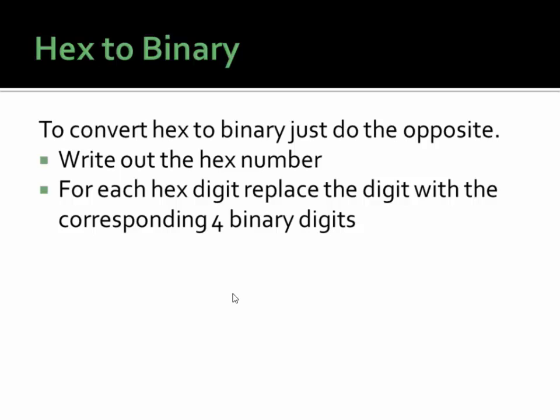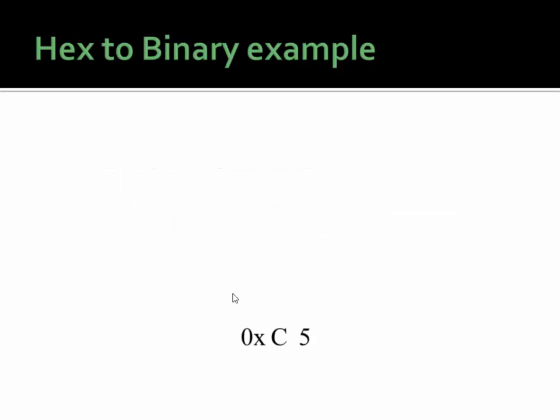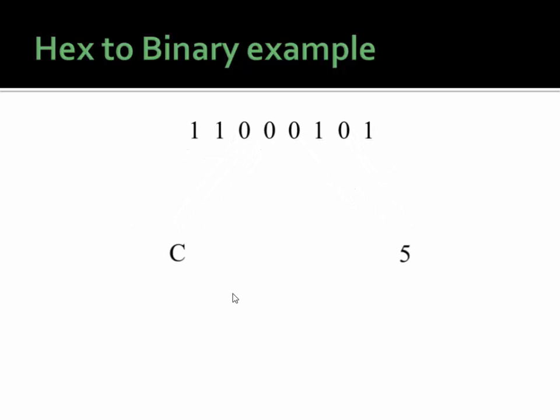If you want to convert hex to binary, just do the opposite. Write out the hex number, and for every hex digit, replace it with the corresponding four binary digits. So if we had C5 in hex and want to turn that to binary, strip off the 0x, split up the C and the 5, convert them to binary, and shove them together. It's very easy to convert from hex to binary and binary to hex.